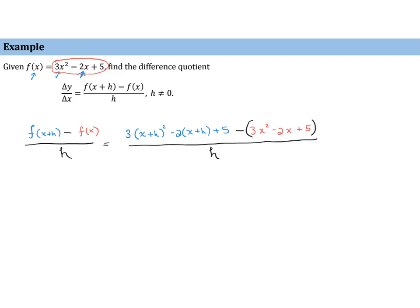Now let's simplify the numerator. The square of x plus h — we have to FOIL that out: x plus h times x plus h is x squared plus 2xh plus h squared. Then we distribute the 3 to get 3x squared plus 6xh plus 3h squared. Then distribute the negative 2: minus 2x minus 2h. And then we have plus 5. Then distribute the negative from subtracting f of x: minus 3x squared plus 2x minus 5.